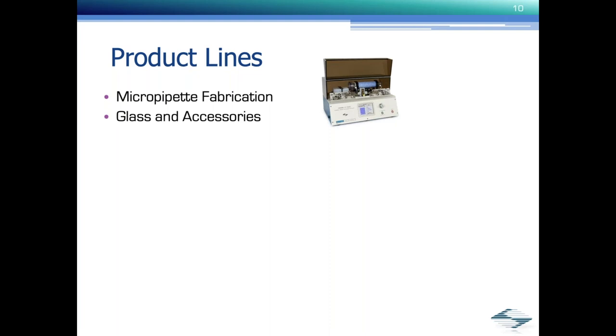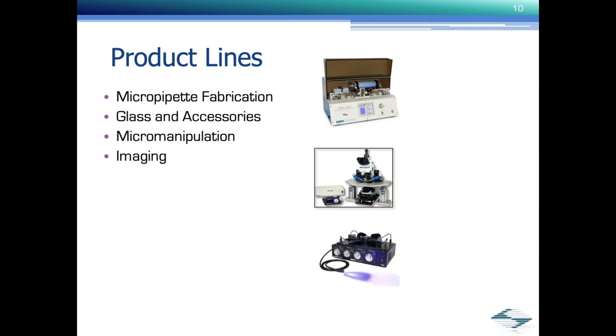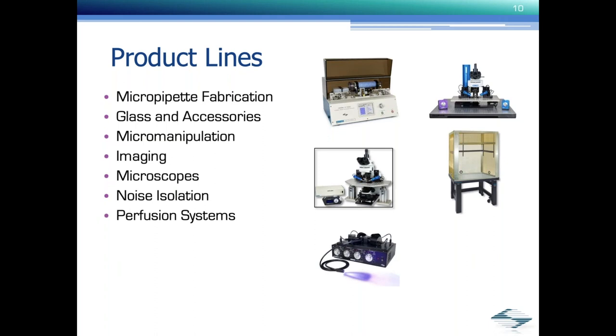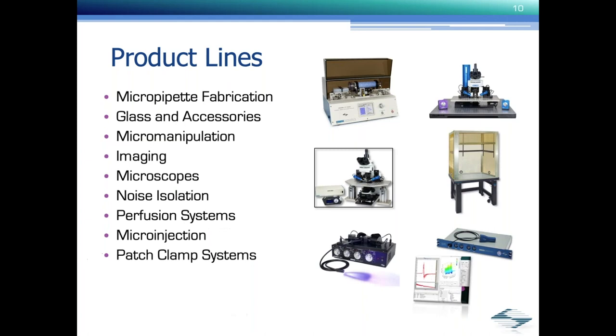Many of you are already aware of Sutter's extensive product line, which includes filament and laser-based micropipet pullers, micromanipulators and microscope stages and platforms, imaging light sources, specialized microscopes. We also carry the TMC tables and Faraday cages, perfusion systems from Automate Scientific, microinjection systems, and finally our newest product line, patch clamp systems. All of these products allow us to provide complete turnkey systems. So let's get started with our patch clamp systems.